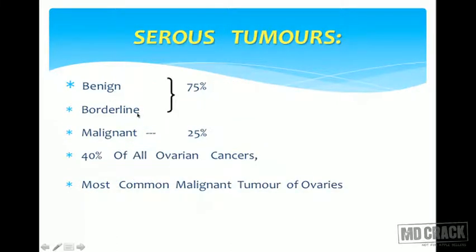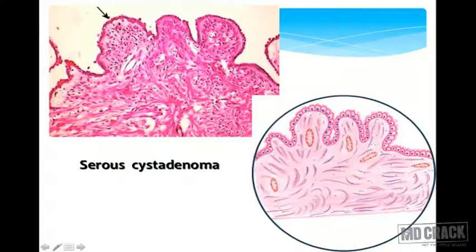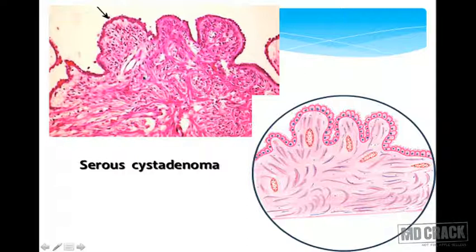Most surface epithelial tumors are benign; rarely borderline, and rarely malignant. About 40% of all ovarian tumors are serous tumors, making serous cystadenoma the most common ovarian tumor overall. The most common malignant ovarian tumor is serous cystadenocarcinoma. Microscopically, cystadenomas show serous lining with low cuboidal epithelial cells, sometimes with cilia, apocrine snouting, and no invasion into the underlying stroma.